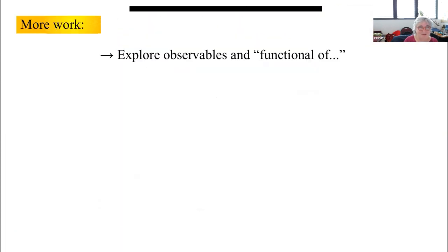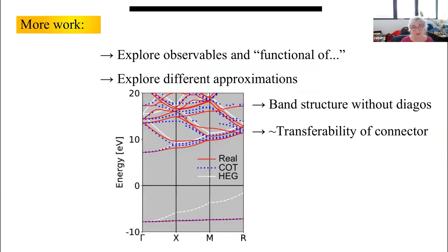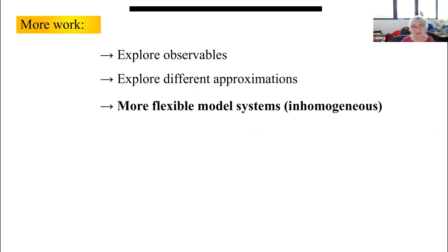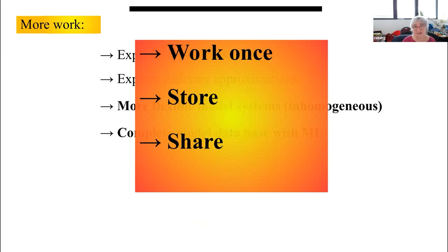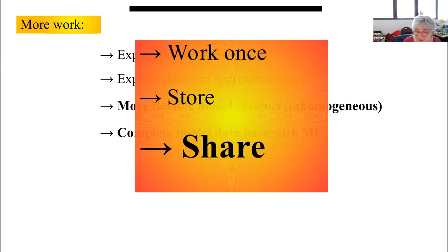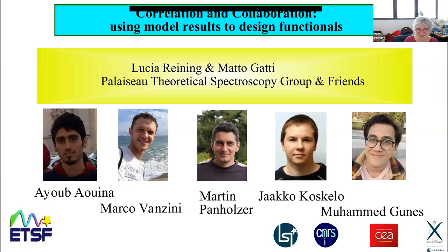To summarize: we are working on using the idea of connecting models and real systems, exploring many observables as functionals of the density, external potential, or other quantities. We get, for example, band structures as functionals of ingredients from the homogeneous electron gas without diagonalizing Hamiltonians. What we really need is more flexible model systems and more people to help us get these model results. We are thinking of inhomogeneous model systems in particular, and will probably also need machine learning to complete the model databases. Our guideline is to work once, have very good results on models, store them, interpolate them, and share them.